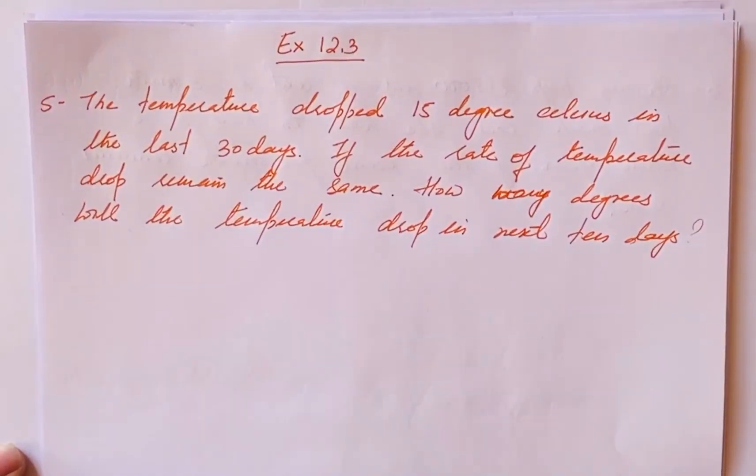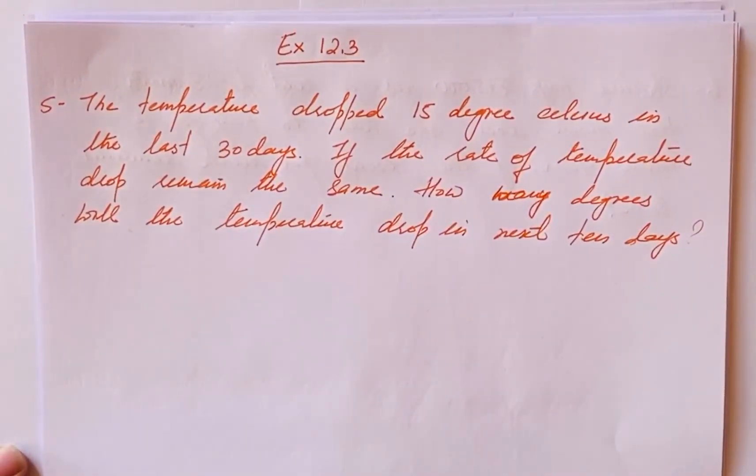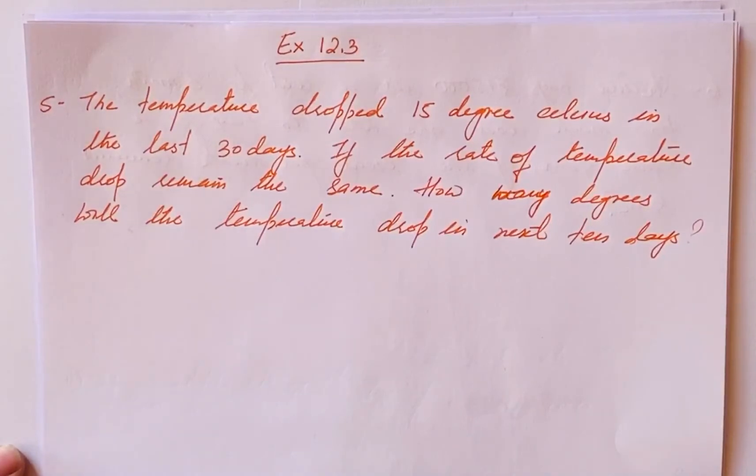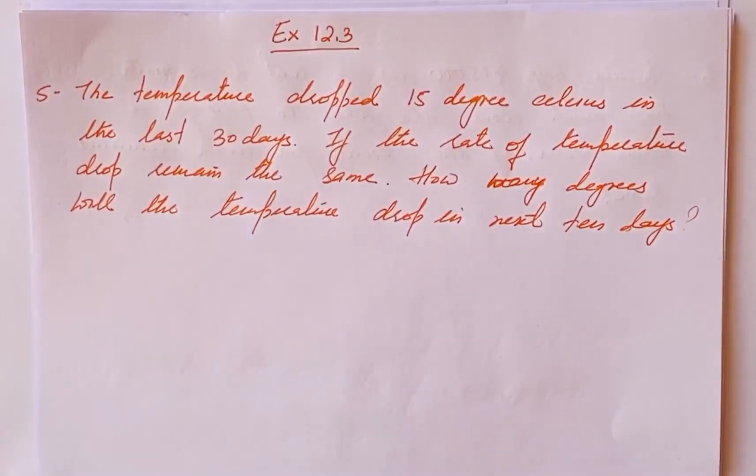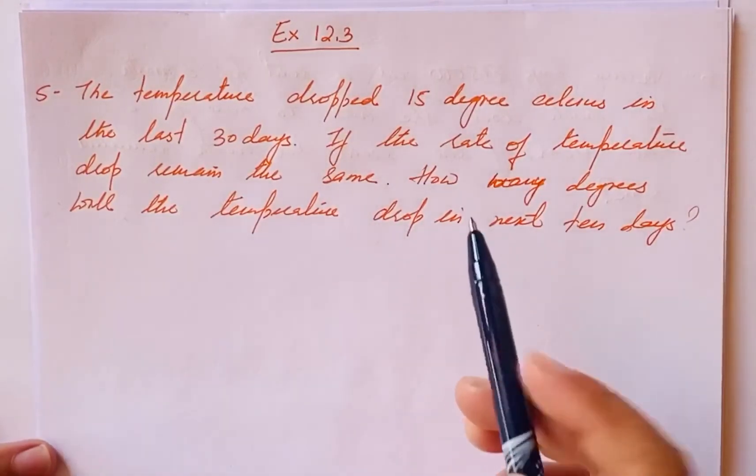Hi everyone, this video is on Exercise 12.3, question number five and six. Let's start with question number five, which says the temperature dropped 15 degrees Celsius in the last 30 days. The temperature drop was 15 degrees Celsius.